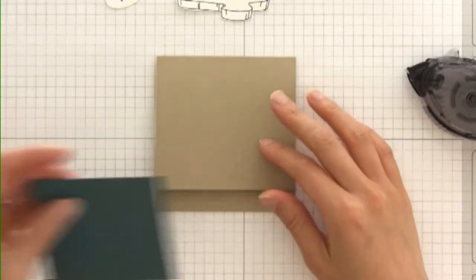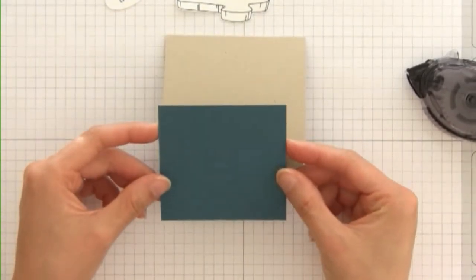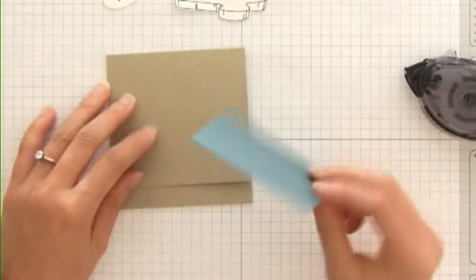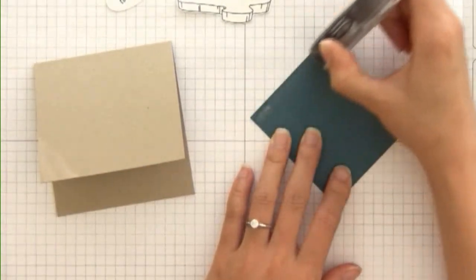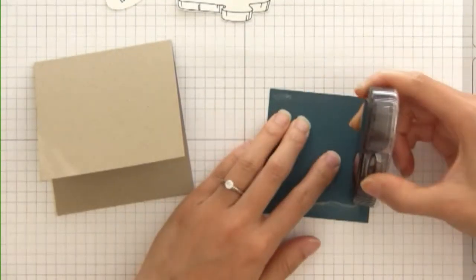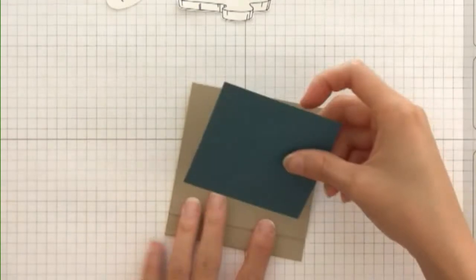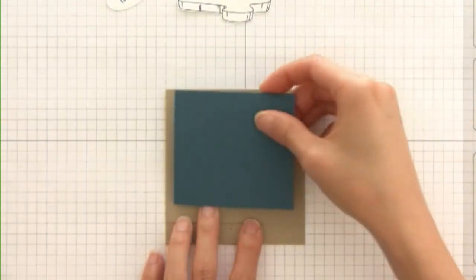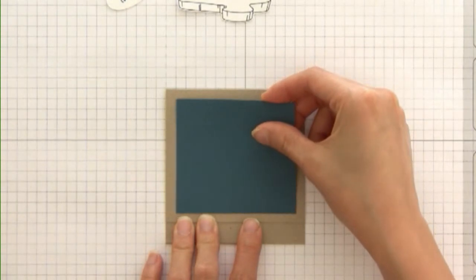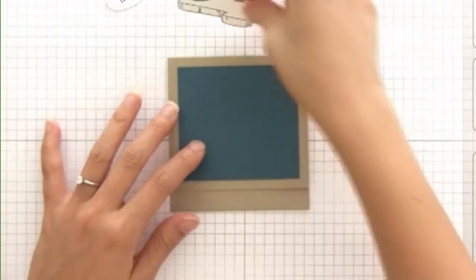Now I have a piece of Not Quite Navy cardstock that is cut to 3 inches by 2¾ inches, and I'm going to adhere that to the front. I'm going to use my grid paper to line that up so I can get it perfectly in the middle.